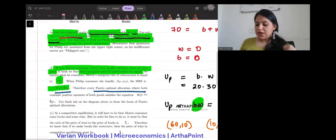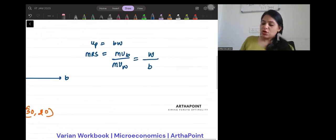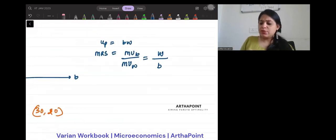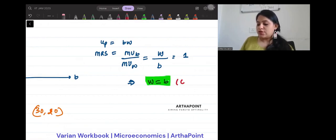Therefore, every Pareto-optimal allocation where both consumers consume positive amount of both goods satisfies this equation. So you're supposed to equate this to the MRS of the other individual. So this will be 1. This implies you will get W is equal to B, and actually this will become your equation of the contract curve.